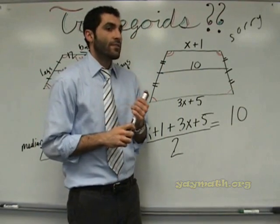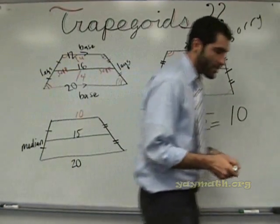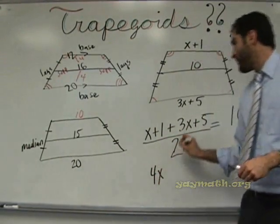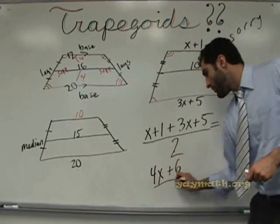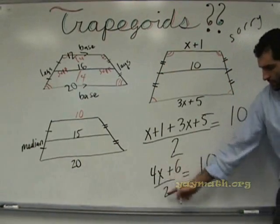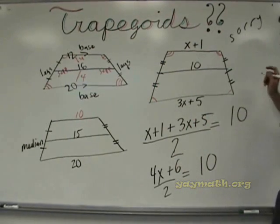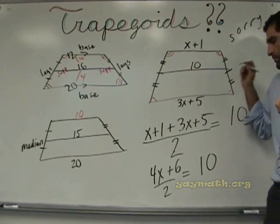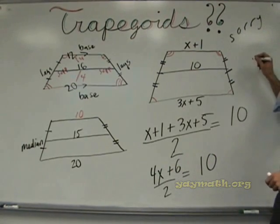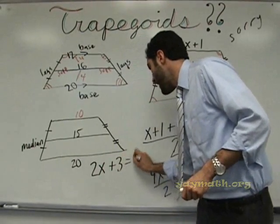Are we going to get into like 4 different parts? No, there's only one median for a trapezoid, right? There's only one median you can draw. Okay, here we go. Combining like terms. x plus 3x is 4x. 1 plus 5? 6. 6 over 2 equals 10. And then isn't it 2x plus 3 equals 10? 2x plus 3 equals 10.